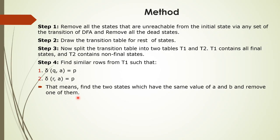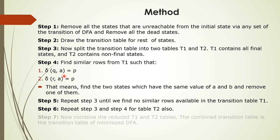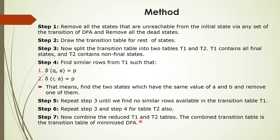We are doing that method where if states A and B are equivalent, we combine them. Repeat steps 3 and 4 until no more similar rows are found in the transition table. We apply this to both T1 and T2. Finally, combine the reduced T1 and T2 tables — the combined transition table is the transition table of the minimized DFA.